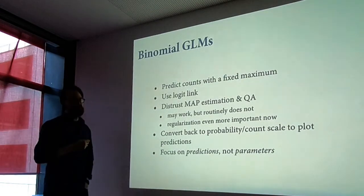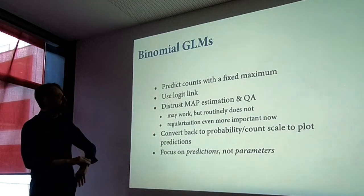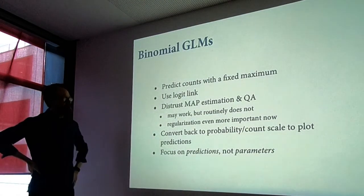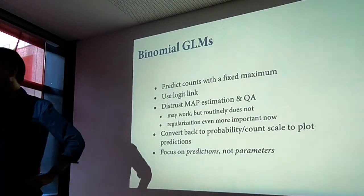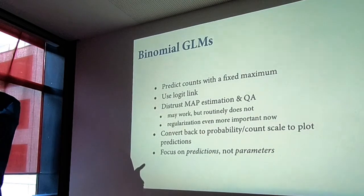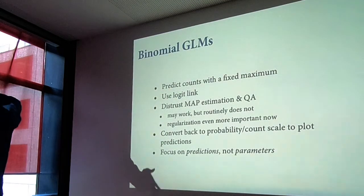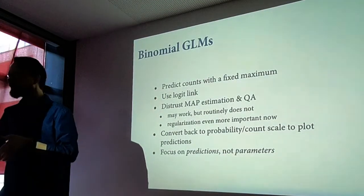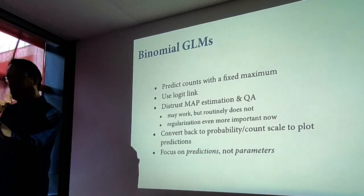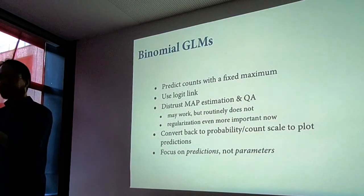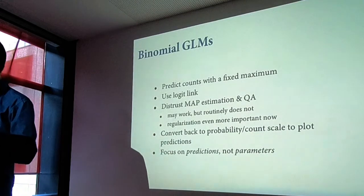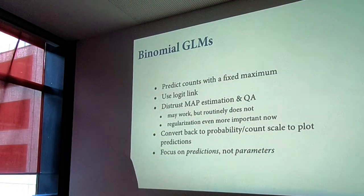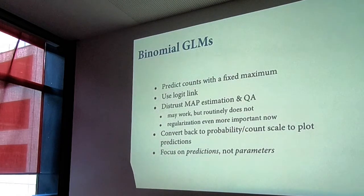Summary slide for binomial GLMs. These are for predicting counts with a fixed maximum — counts always have a minimum of zero, and there's a known maximum. You do the binomial regression when you know the maximum possible observation before you've seen the data. So you know the number of animals, and the thing you're trying to predict is how many lived. When you don't know the number of animals and you have a count of how many died, that's not a binomial regression because you don't know n.